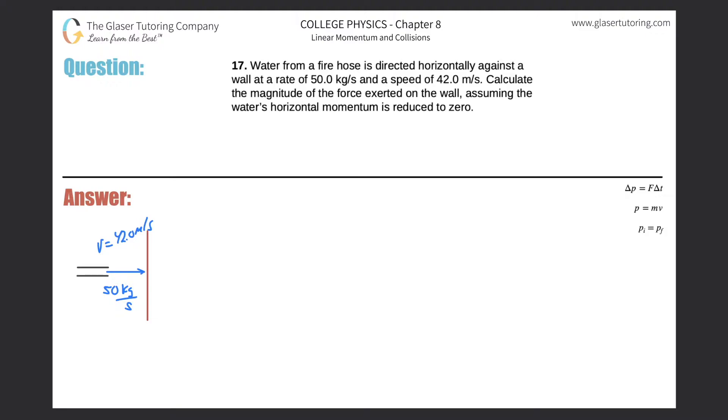Number 17. Water from a fire hose is directed horizontally against a wall at a rate of 50 kilogram per second and a speed of 42 meters per second. Calculate the magnitude of the force exerted on the wall, assuming the water's horizontal momentum is reduced to zero.